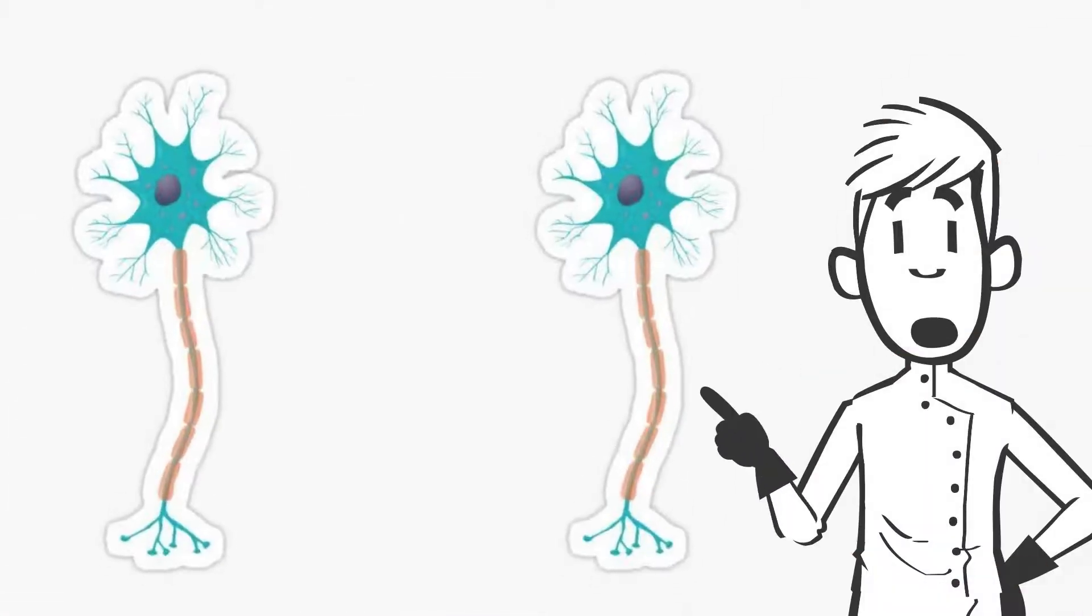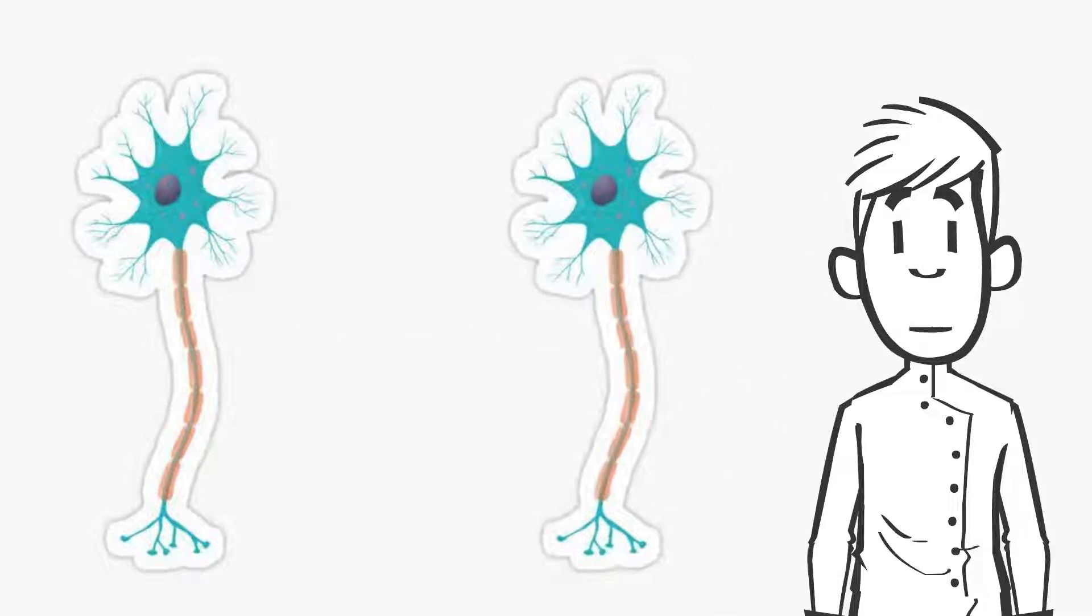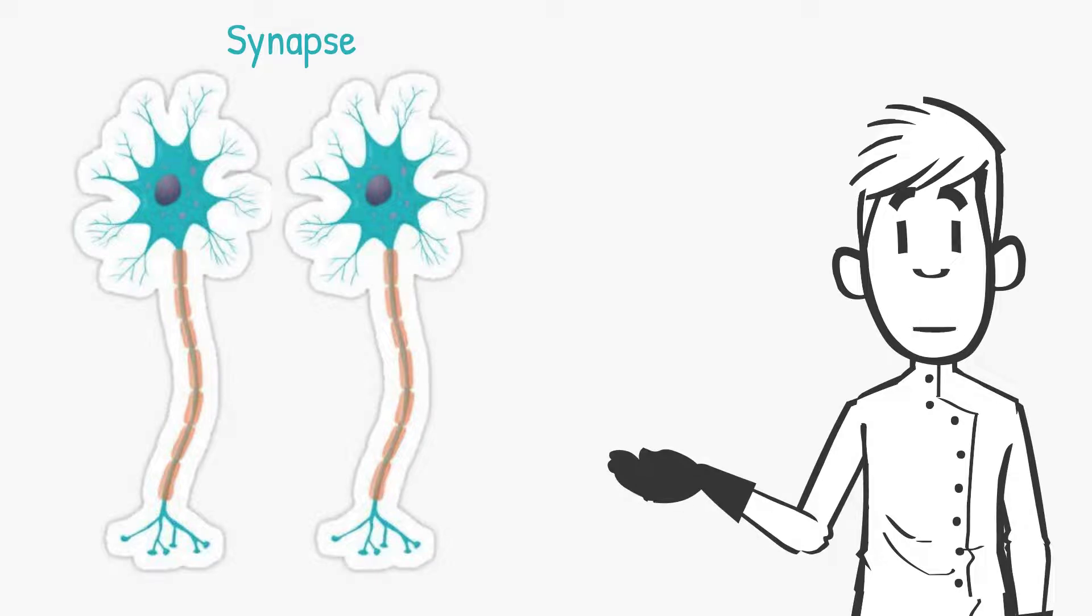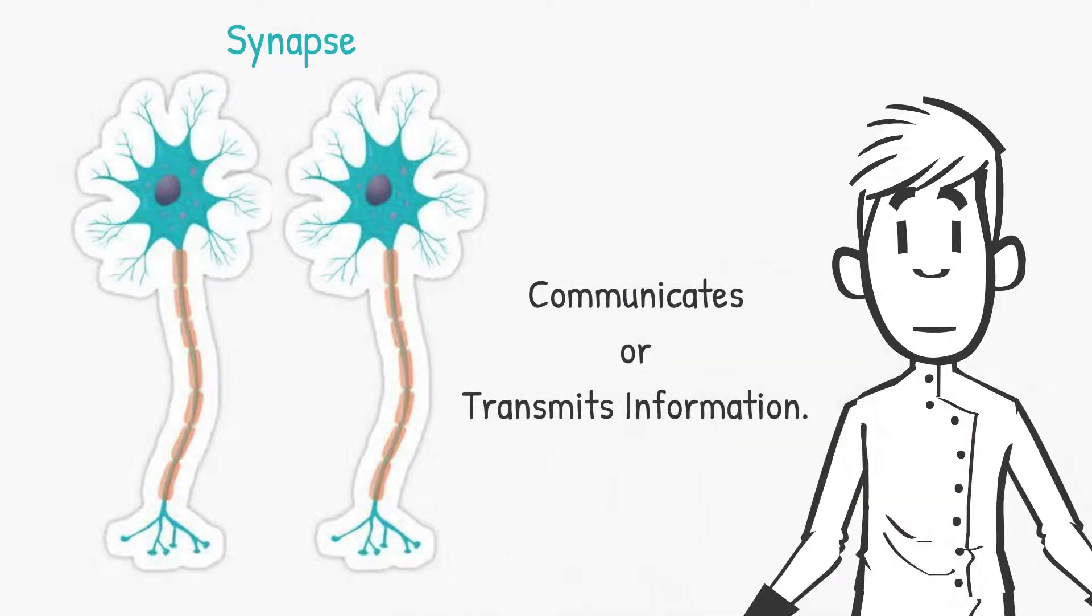What's interesting is that our neurons don't touch each other, but wherever a neuron comes close to another one, a synapse is formed between the two, through which it communicates or transmits information.